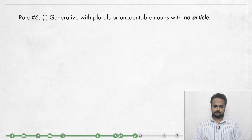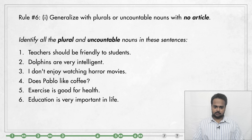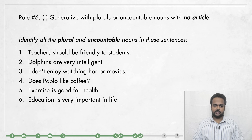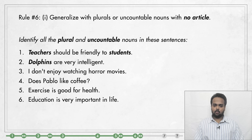Let's now turn to rule number six. This rule is about how to make generalizations — that is, how to talk generally about a whole group or class of people or things. Rule number six is: generalize with plurals or uncountable nouns with no article. On the screen there are six sentences. I'd like you to find all the plural and uncountable nouns. In number one, there are two plurals — teachers and students. We're not talking about any one teacher or student in particular; we're saying all teachers should be friendly to all students. In number two, 'dolphins' is a plural noun used to say that all dolphins are intelligent. In number three, 'horror movies' is what I'm generalizing about — I hate all horror movies, not a particular one.